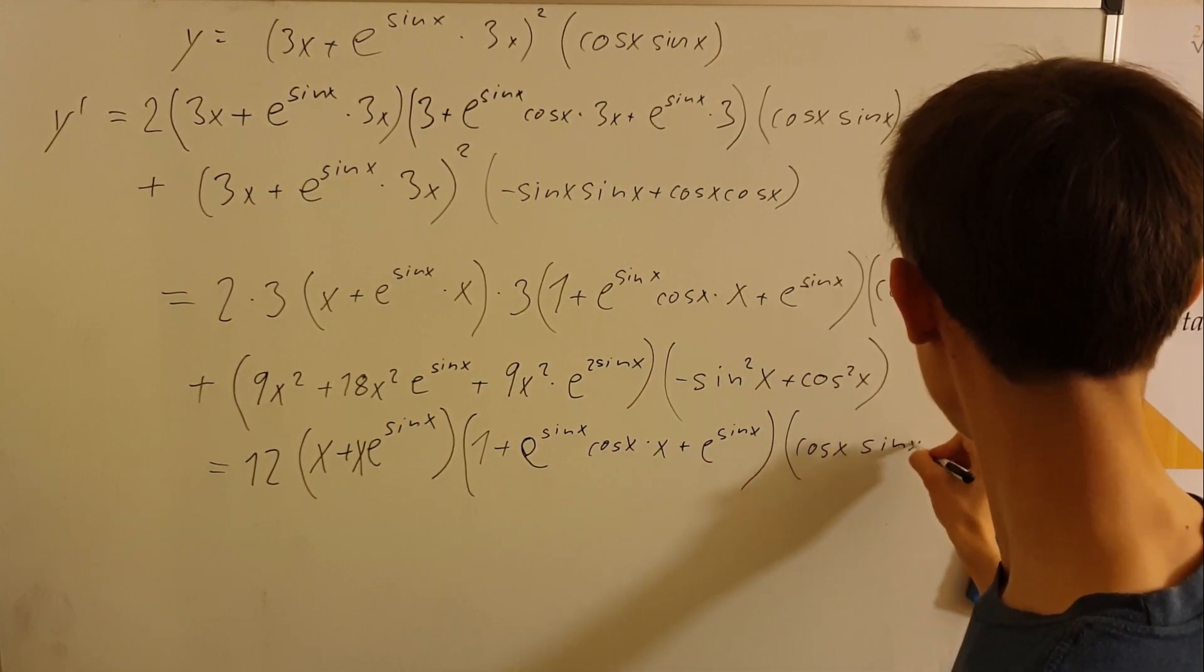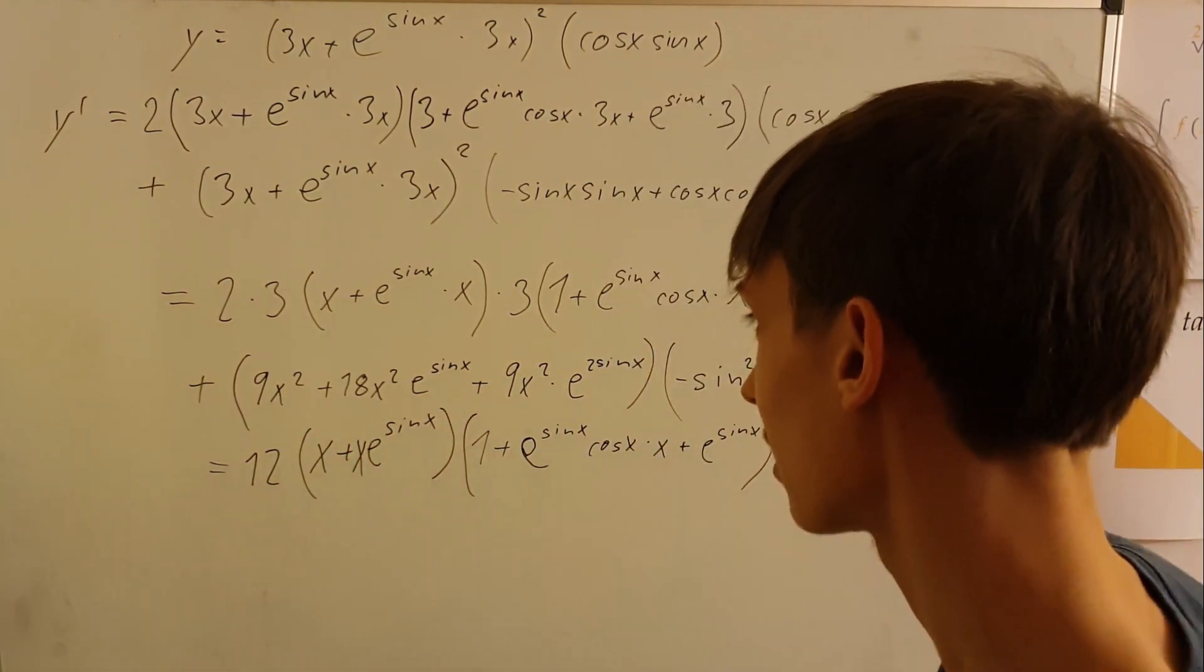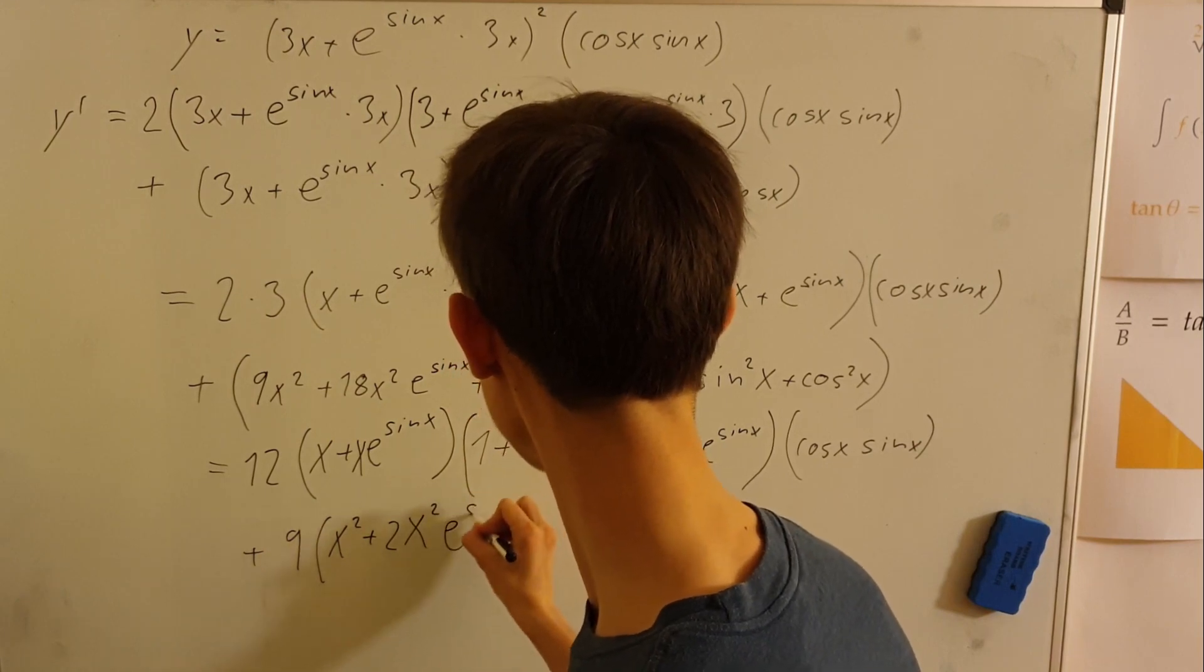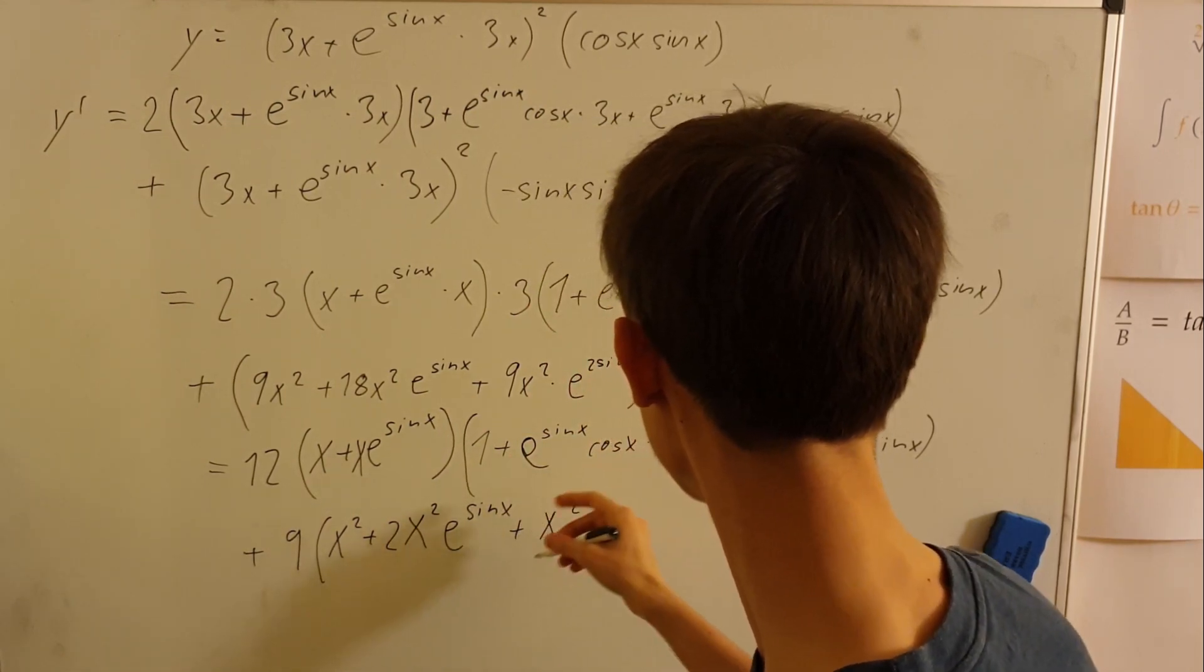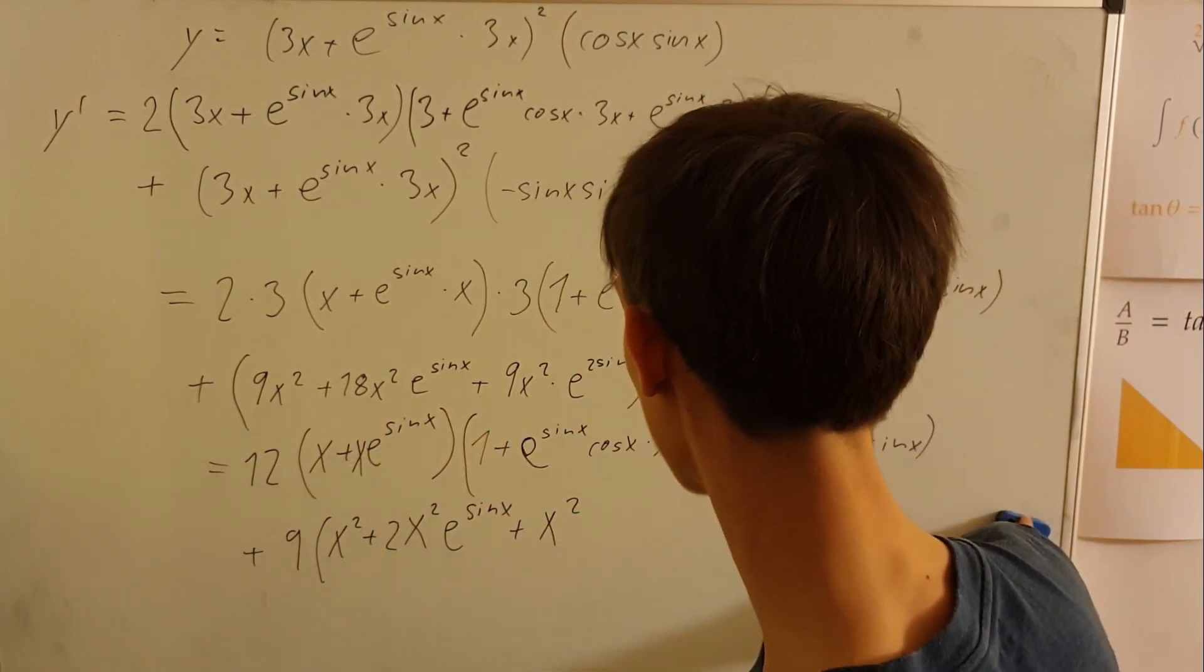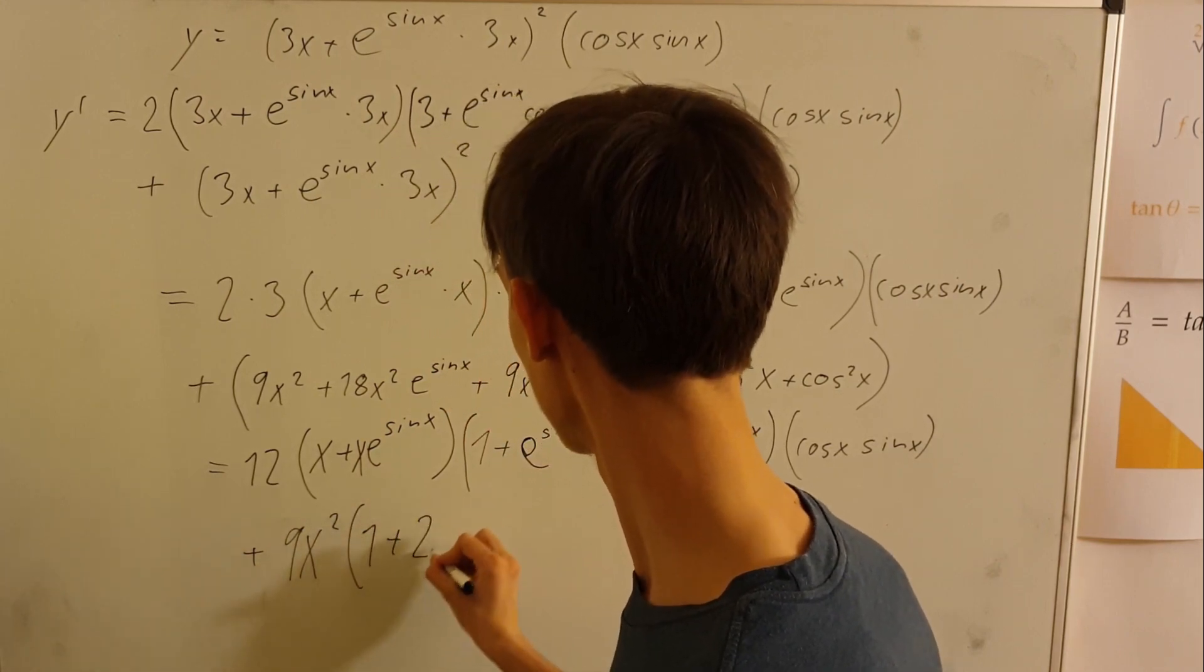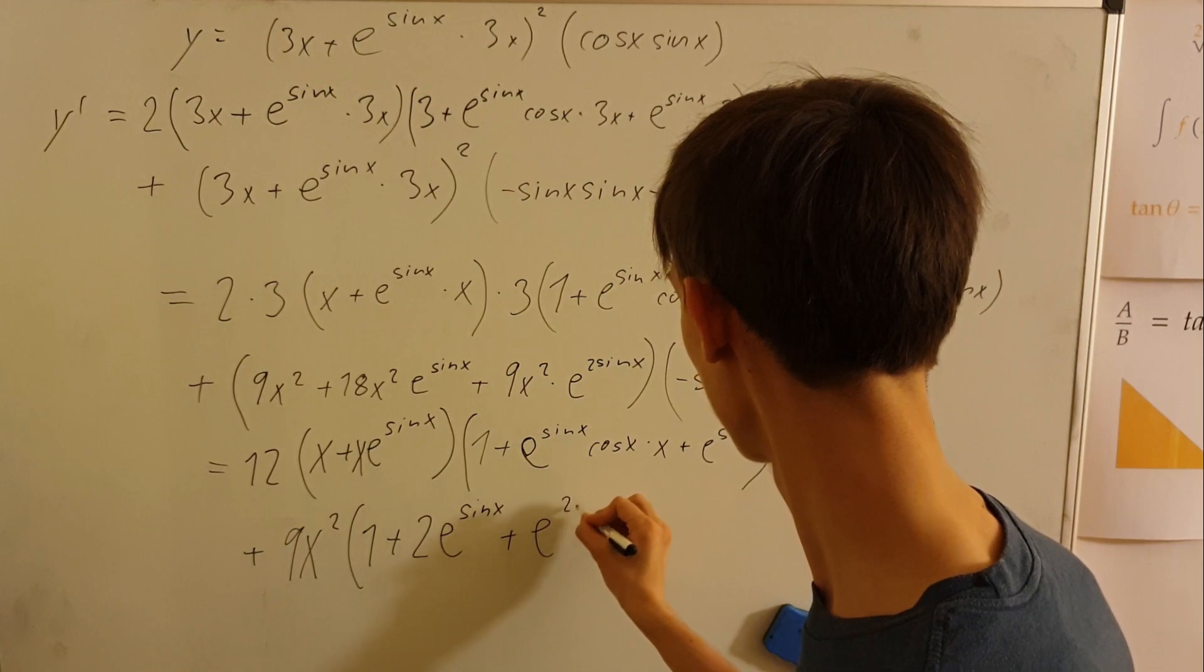We can take a nine out of here, so we can do plus nine of x squared plus two x squared e to sine x plus x squared. Maybe we could have taken the x squared out as well so let's do it that way. We'll take nine x squared out so we'll do one plus two e to sine x plus e to two sine x.